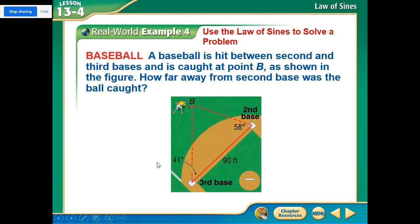All right. A baseball is hit between second and third base and is caught at point B. How far away from second base was the ball caught? Well, we know on a baseball field that the bases are 90 feet across from each other, and let's say that this is 41 degrees and 58 degrees. So we have an angle-side-angle kind of deal going on here, but we want to find out what this value is here.